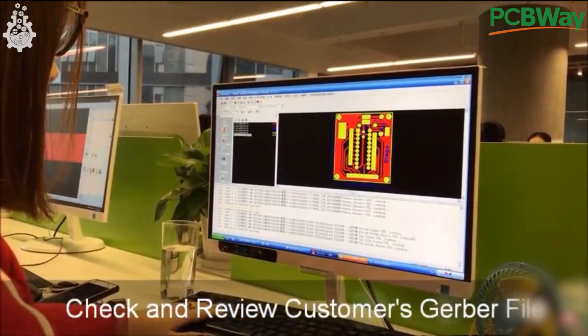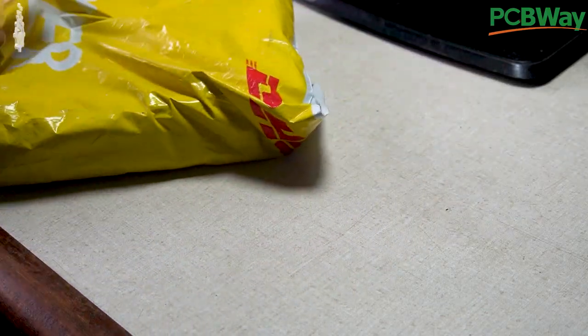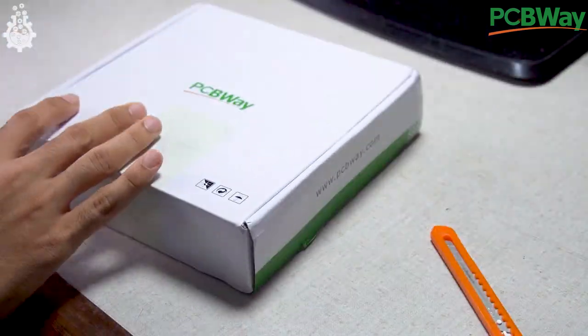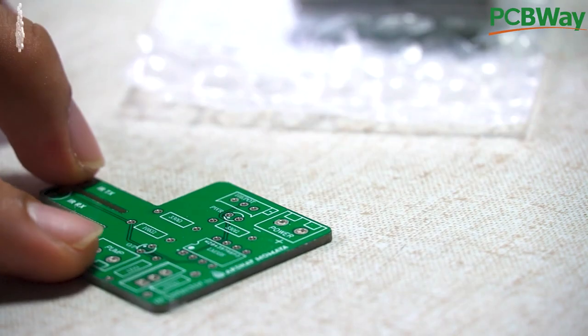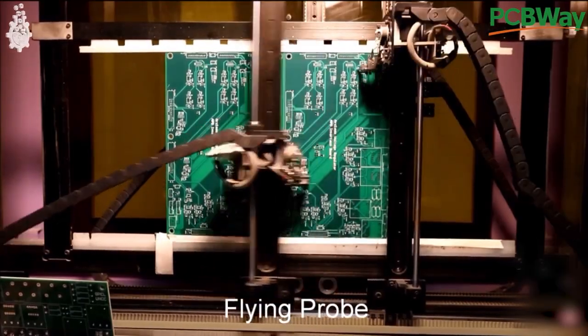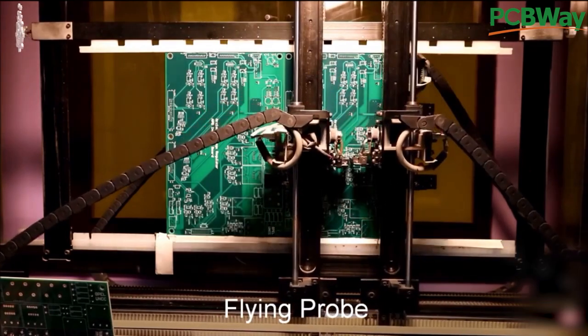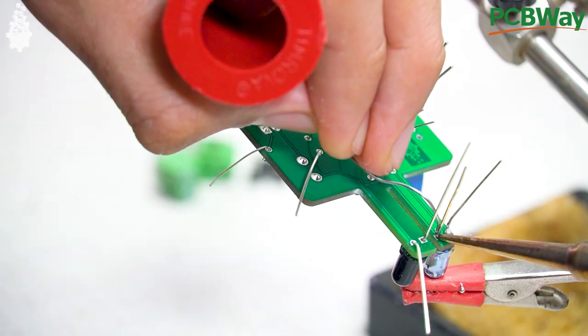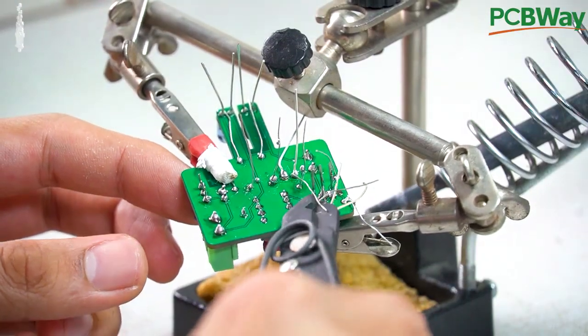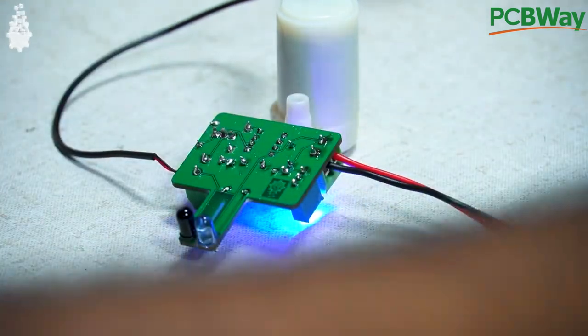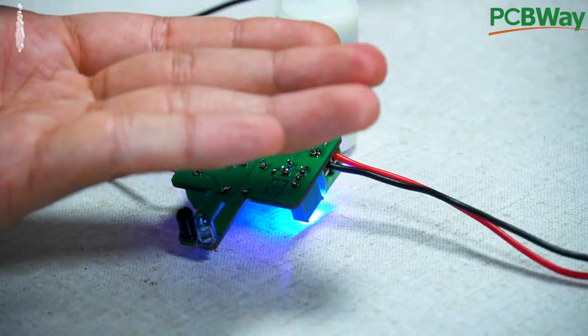After uploading the Gerber files, engineers at PCBWay will audit your Gerber file for free and indicate if there is any mistake in the PCB. After waiting for a week or so, I received the PCB and closely inspected the quality, which turned out to be awesome. PCBWay has a dedicated testing and quality assurance team. With that trust, I will straightaway start soldering. After soldering, I tested the circuit with everything attached and it works as expected.